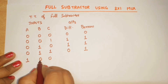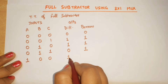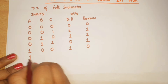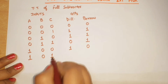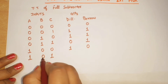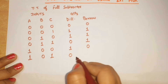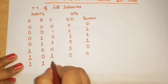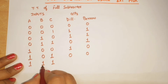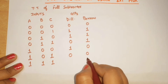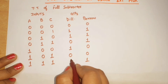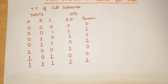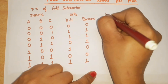Continuing the truth table: 1 0 0 — borrow is not required, 1 minus 0 is 1, difference is 1. 1 0 1 — 1 minus 1 is 0. 1 1 0 — difference 1. 1 1 1 — difference will be 1. So this completes the difference and borrow columns of the truth table.